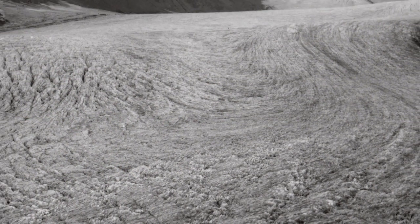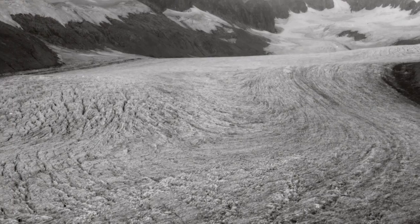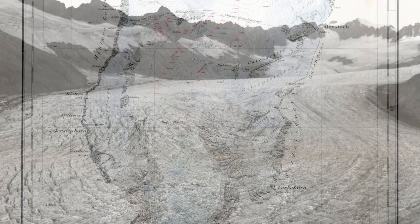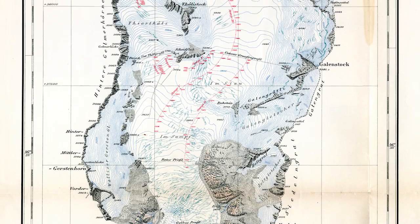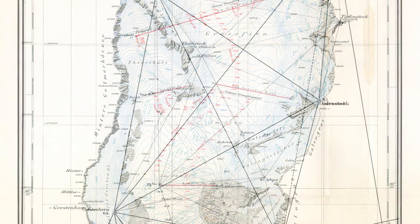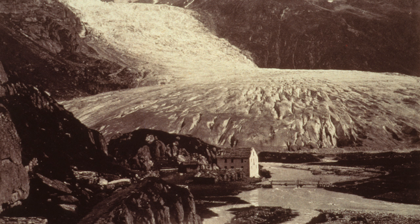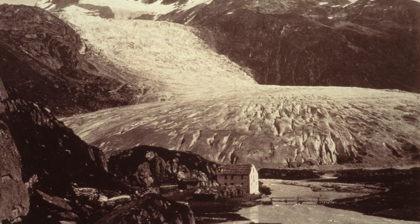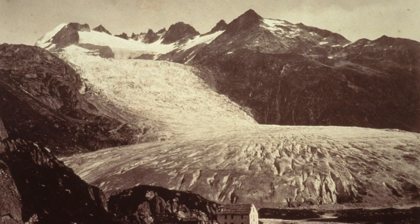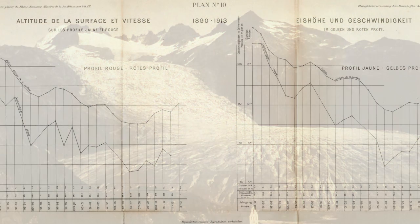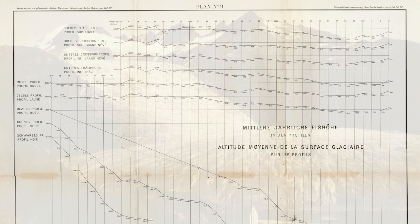For more than a century, the World Glacier Monitoring Service and its predecessor organizations have been collecting data on glacier fluctuations worldwide. The worldwide collection of glacier data was initiated in 1894 in Switzerland. It was hoped that long-term glacier observations would give insight into processes of climatic change, such as the formation of ice ages.